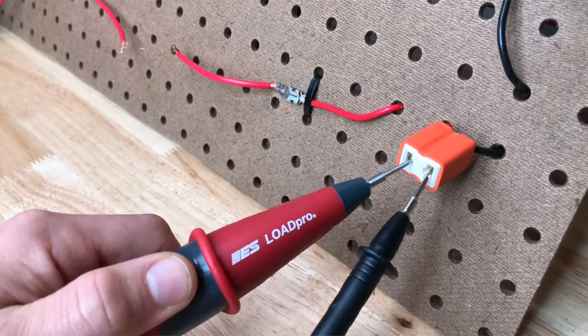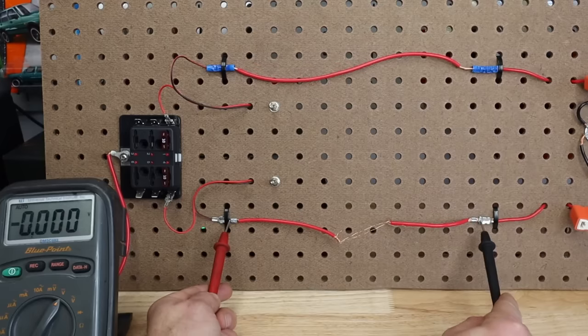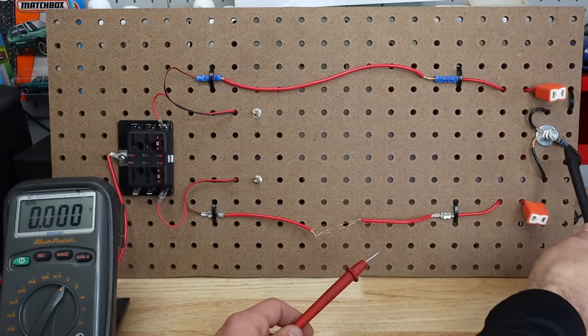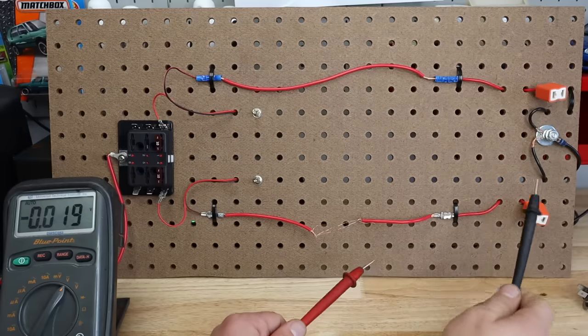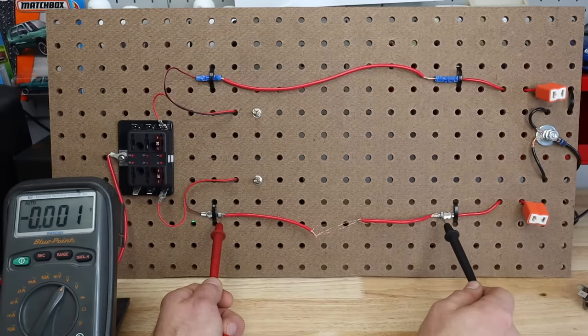This can be done on the positive side, this can be done on the ground side. In fact volt drops on the ground side usually cause weirder problems than volt drops on the power side.